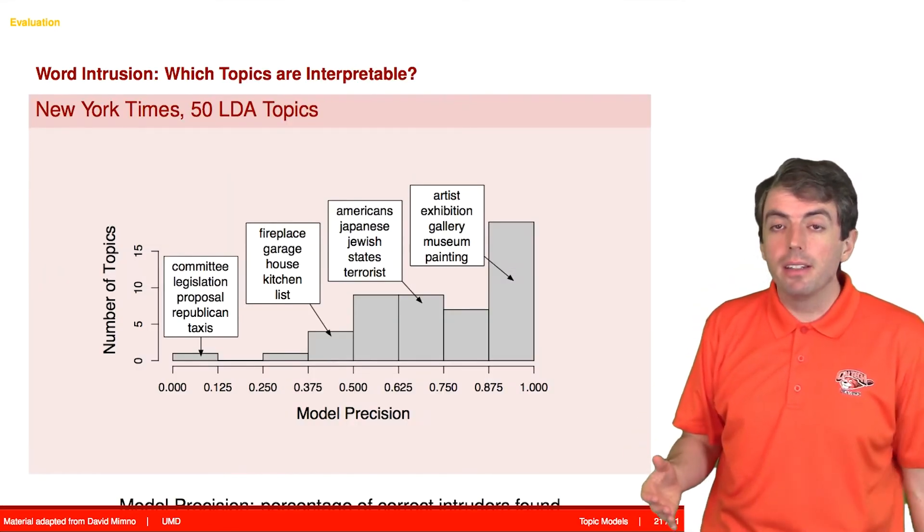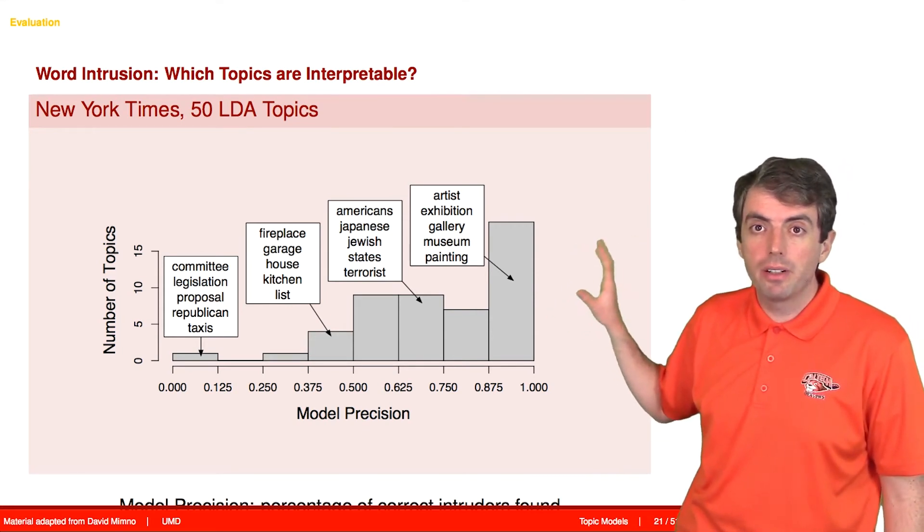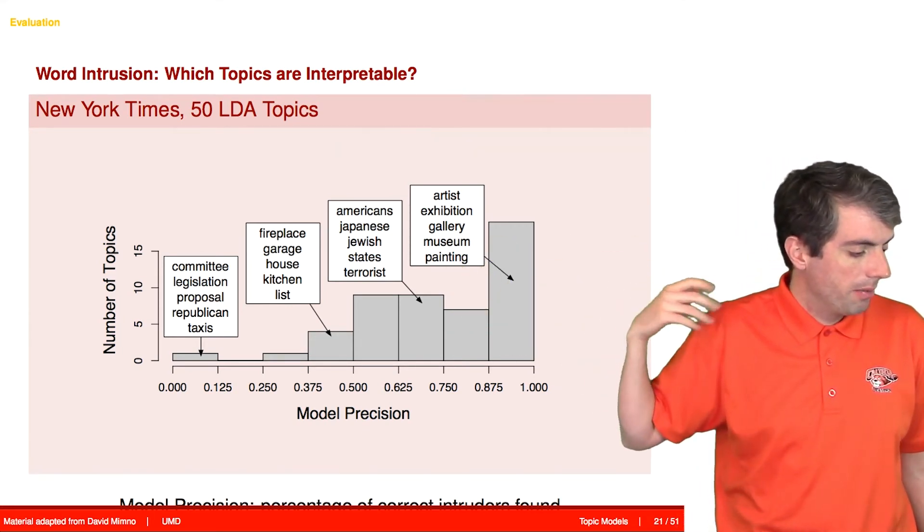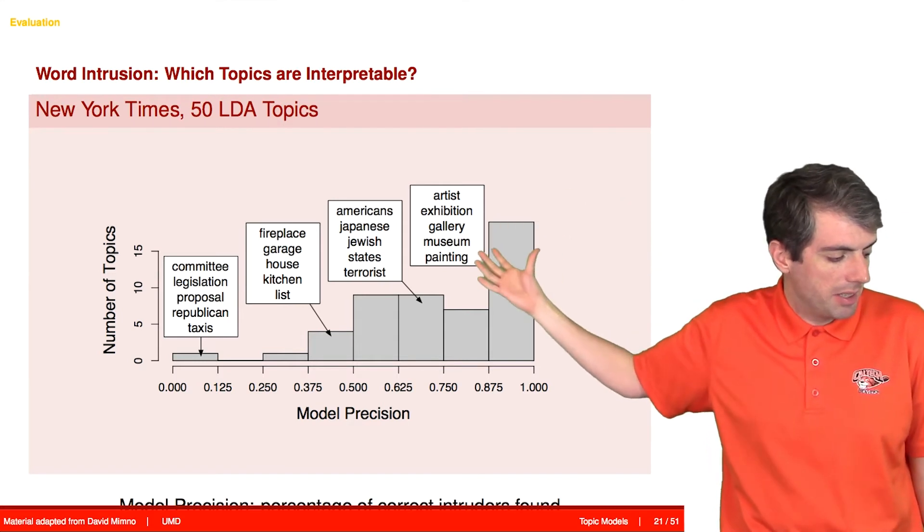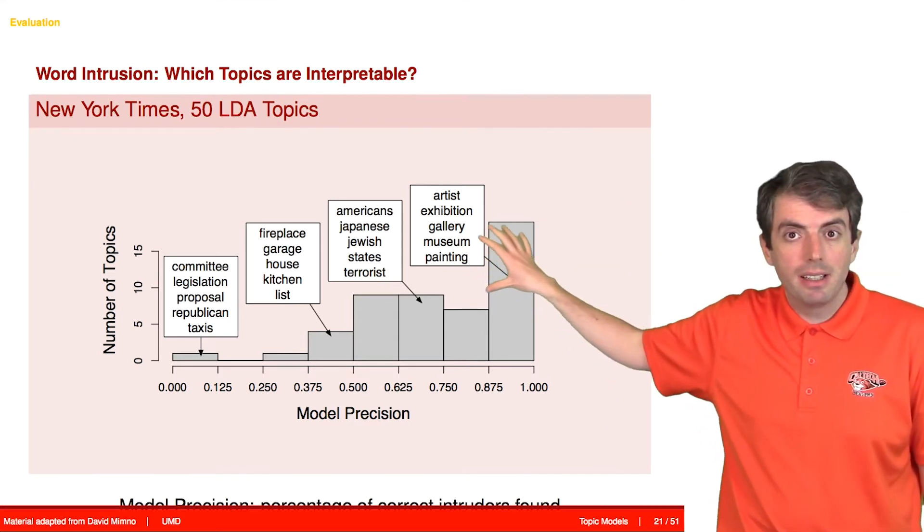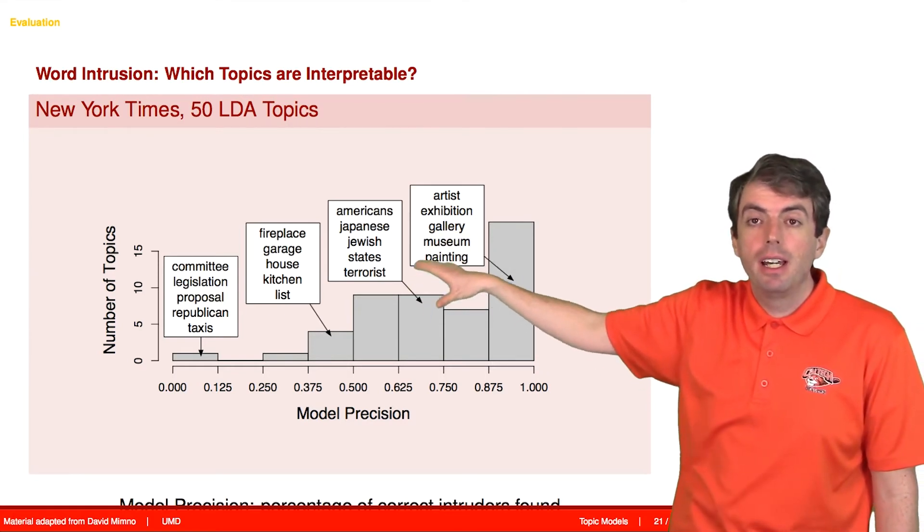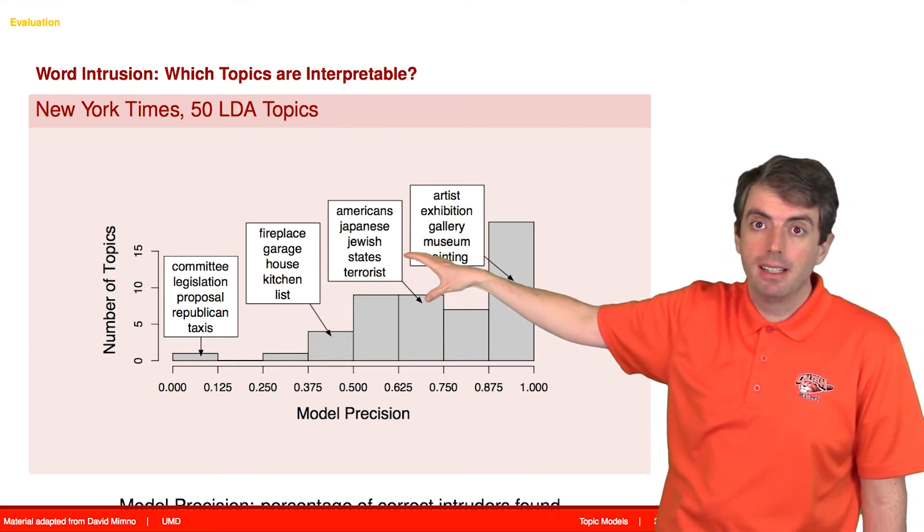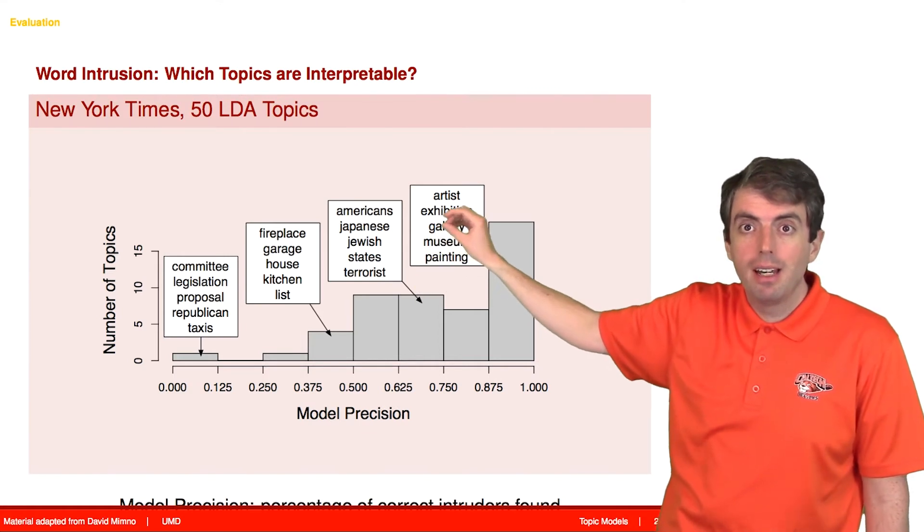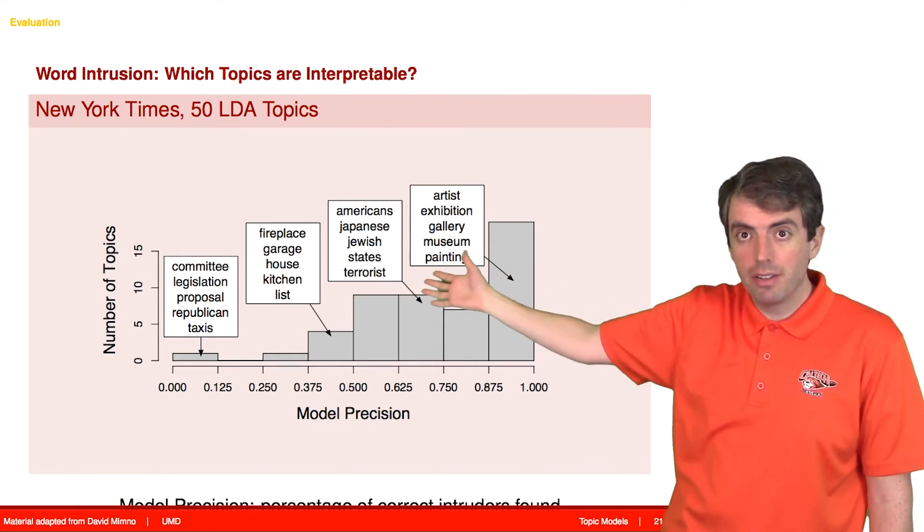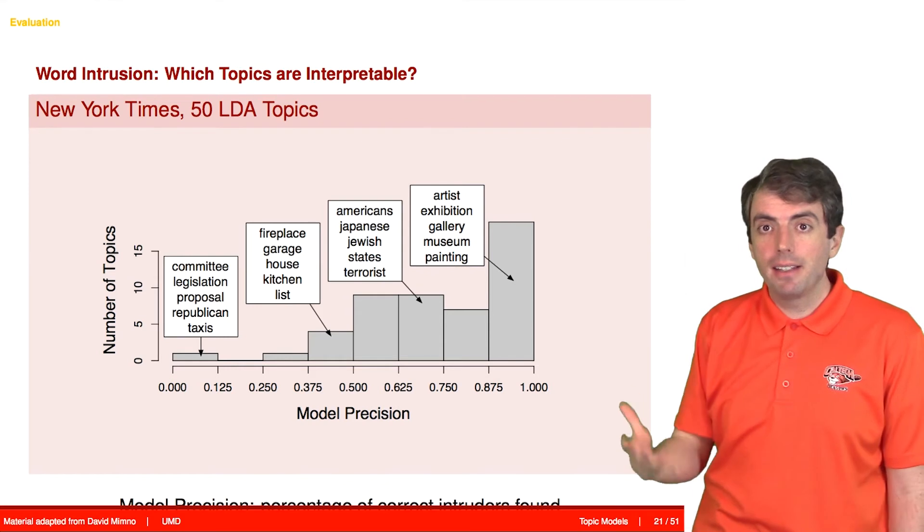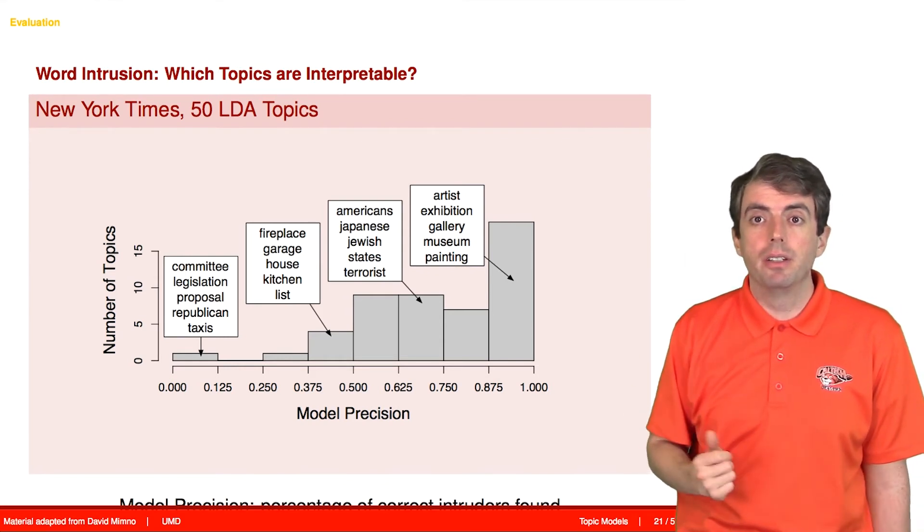So if you do this, you can find what are good topics and what are bad topics. And so, for example, this artist exhibition gallery topic looks pretty good. But as you go further and further over, you're not finding the intruder word correctly. People are actually clicking on words that the model thought were part of the topic. And that suggests that the model wasn't very good to begin with.